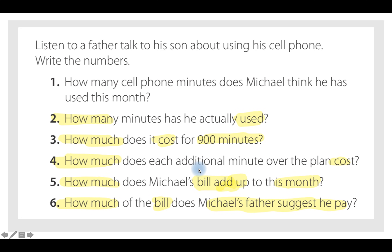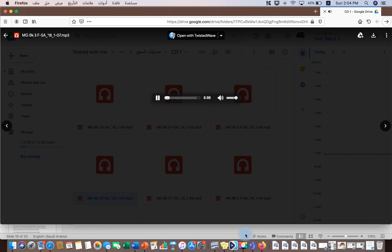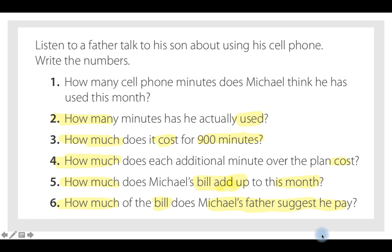You may pause the video and try to read the questions carefully. Now I'm going to run the recording. Listen to a father talking to his son about using his cell phone. Write the numbers. Page 11, listening exercise 5.